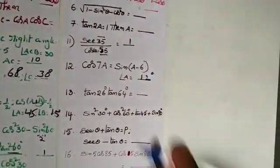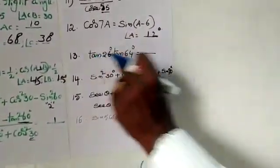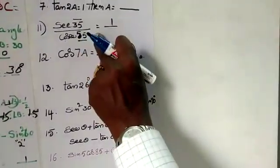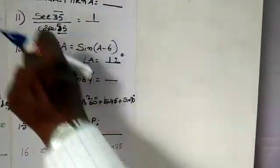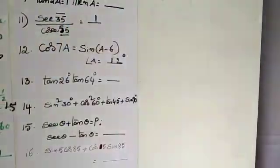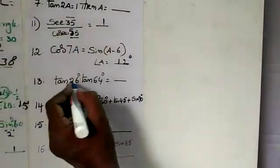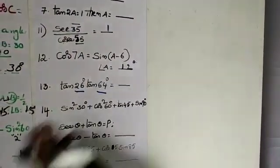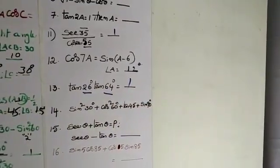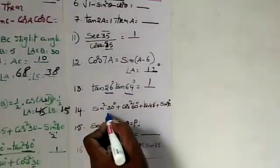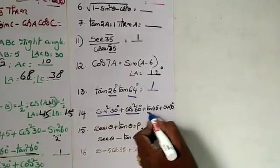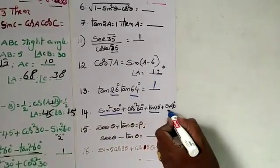Next, when given a fraction or product, its value is 1. If the angles add up nicely - for example 26 plus 64 equals 90 - then the product equals 1. Here also, sin squared 30 plus cos squared 60 plus tan 45.